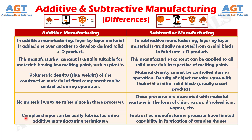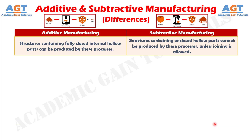Difference number 5. Complex shapes can be easily fabricated using additive manufacturing techniques. Whereas, subtractive manufacturing processes have limited capability in the fabrication of complex shapes.